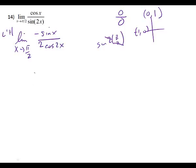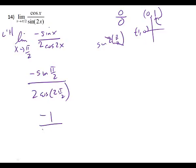Now let's try plugging in pi over 2. We've got sine of pi over 2 over 2 times cosine of 2 times pi over 2. What's sine of pi over 2? One. And it's negative because the negative is up there. This is going to cancel. What's cosine of pi? Negative one. So what is my answer? One half.